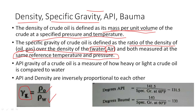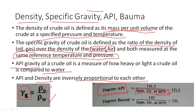API gravity tells you how heavy or how light your crude oil is when compared with water. API gravity and density are inversely proportional to each other. The formula is: degrees API = 141.5 divided by specific gravity measured at 60°F, minus 131.5. Since specific gravity is in the denominator, API gravity and specific gravity are inversely proportional.